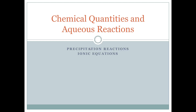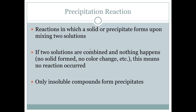In this tutorial, we'll be discussing precipitation reactions and ionic equations. Reactions in which a solid or precipitate is formed upon mixing two solutions is called a precipitation reaction. If two solutions are combined and nothing happens — no solid is formed, no color change, etc. — this means no reaction actually occurred. We're looking for changes when we mix the two things together.